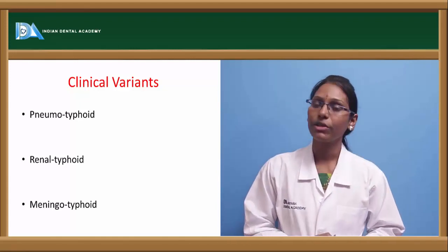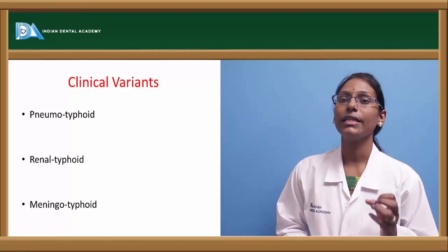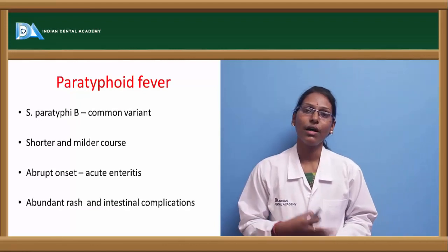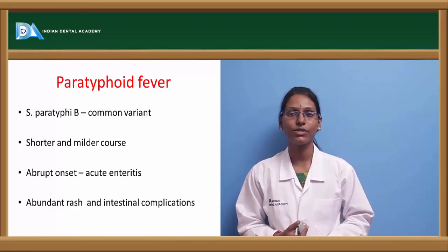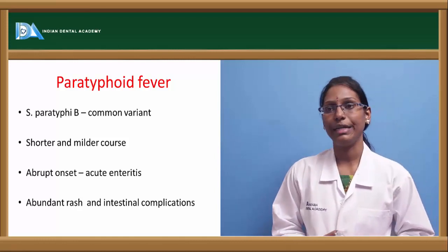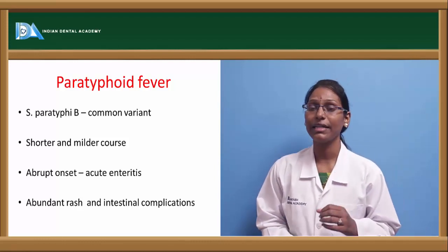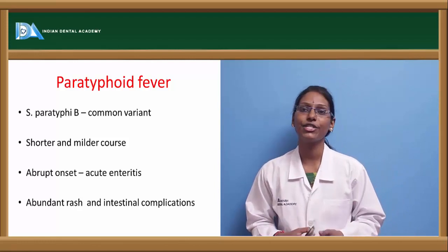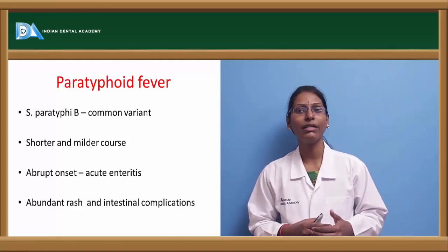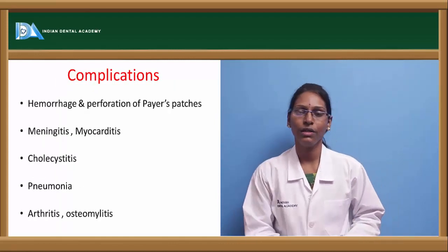Other clinical variants include pneumotyphoid, renal typhoid, and meningotyphoid, based upon which organ is attacked by the bacteremia. The next type of enteric fever is paratyphoid fever, caused by Salmonella paratyphi A, B, or C — with Salmonella paratyphi B being the common variant. It is usually shorter and milder in course than typhoid fever but attacks very abruptly, and there can be acute enteritis with abundant rose-red spot rashes. Intestinal complications in paratyphoid fever are relatively rare compared to typhoid fever.